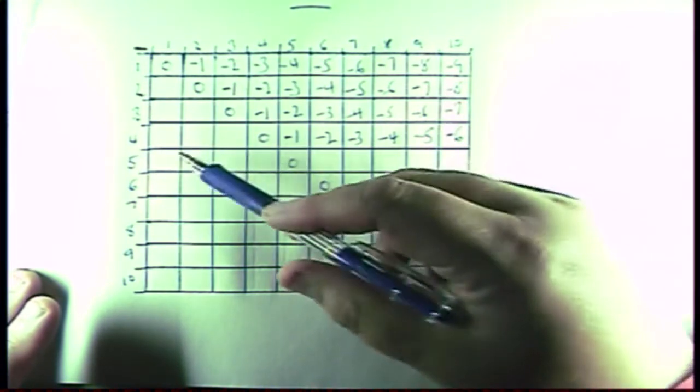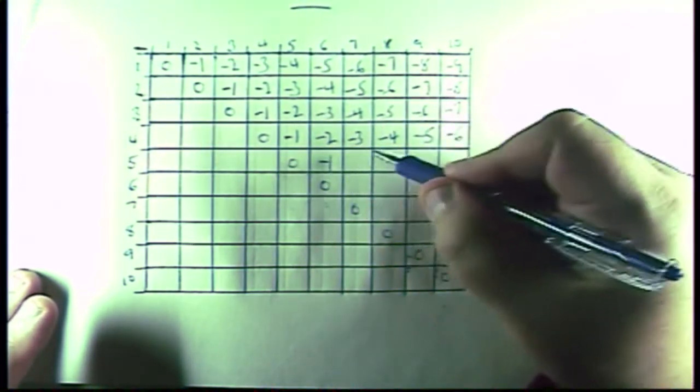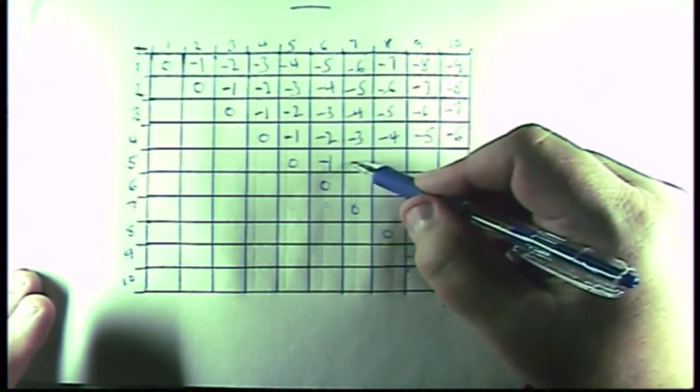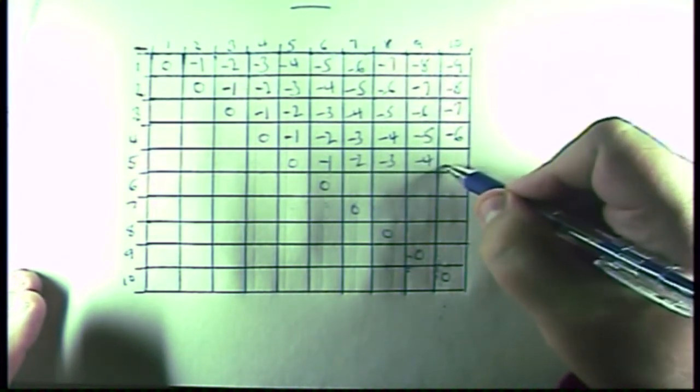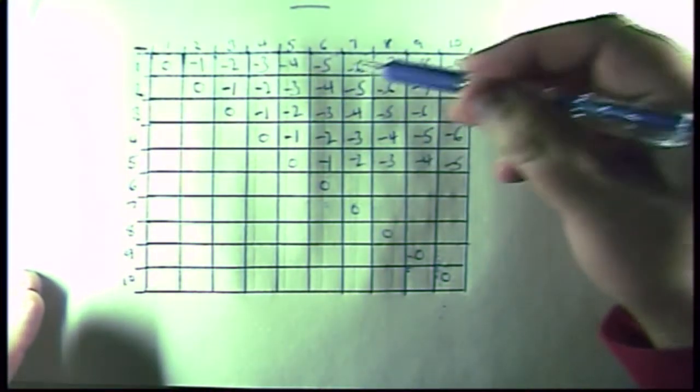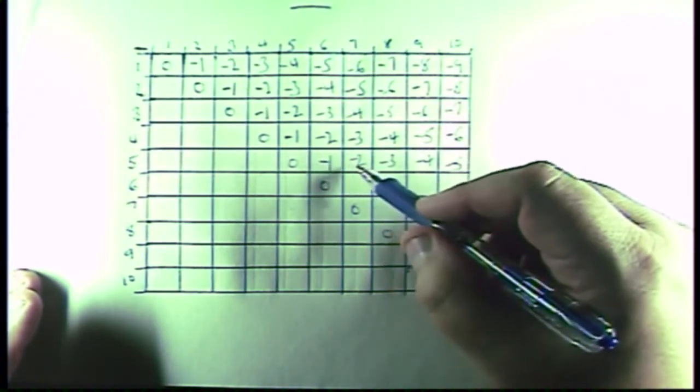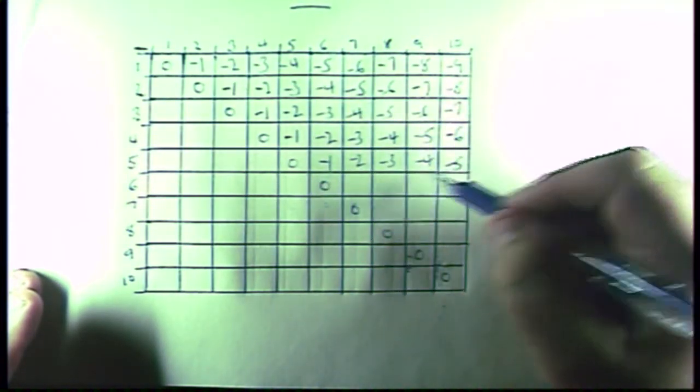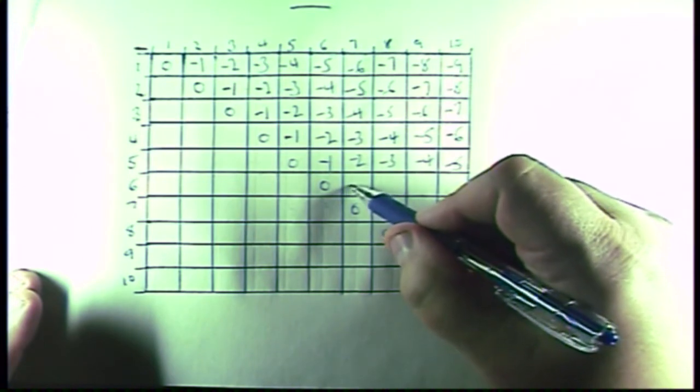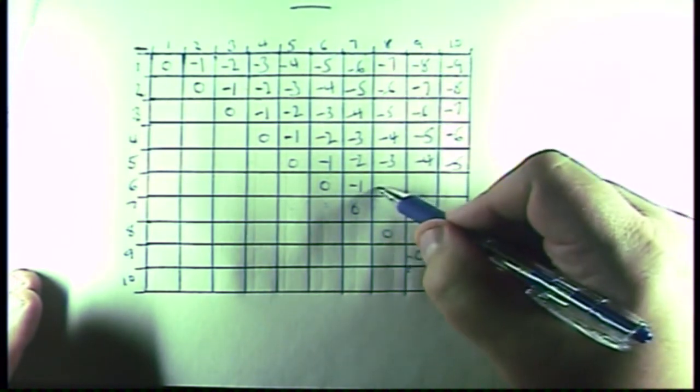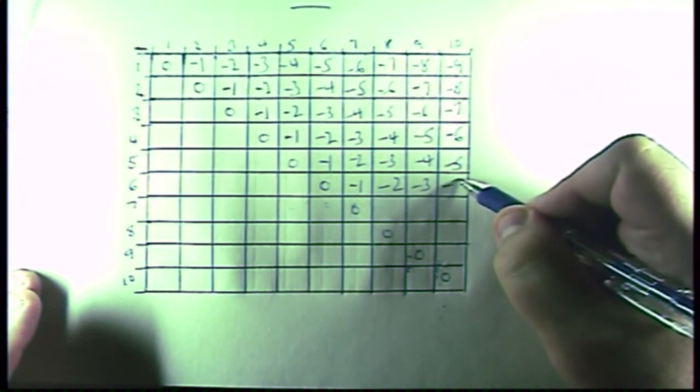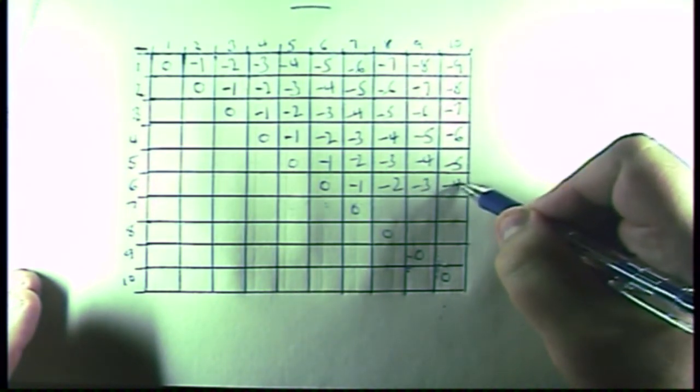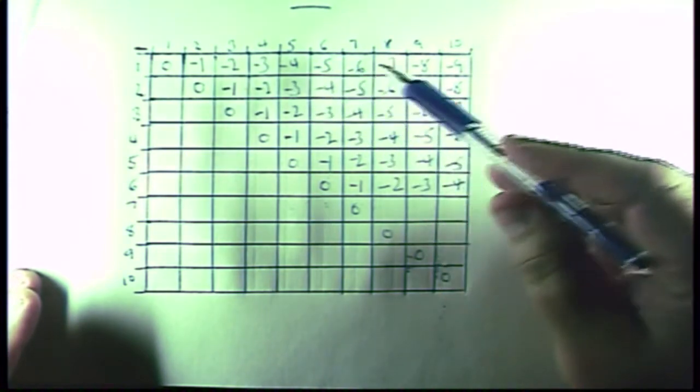Same thing here. 5 minus 6 is a minus 1, and then 5 minus 7 is a minus 2, minus 3, minus 4, and minus 5. See how this trend happens here when you're doing this subtraction? It always counts up in this, or counts down in this direction. And right here we've got 6 minus 7 is a minus 1. It's a minus 2, a minus 3, and a minus, what would this be here? A 4.